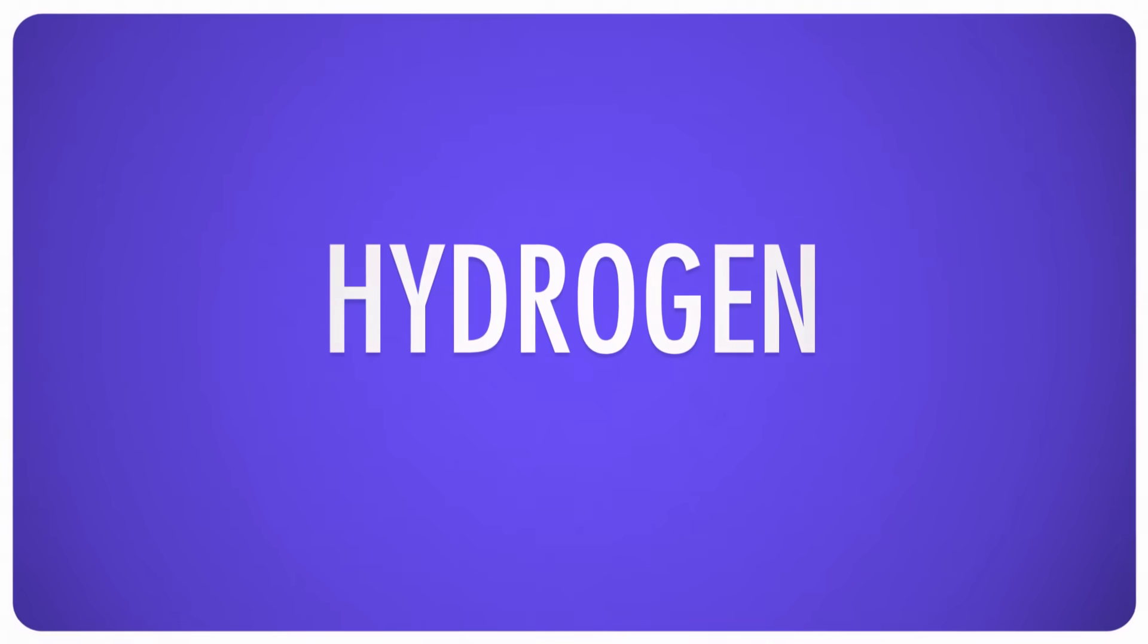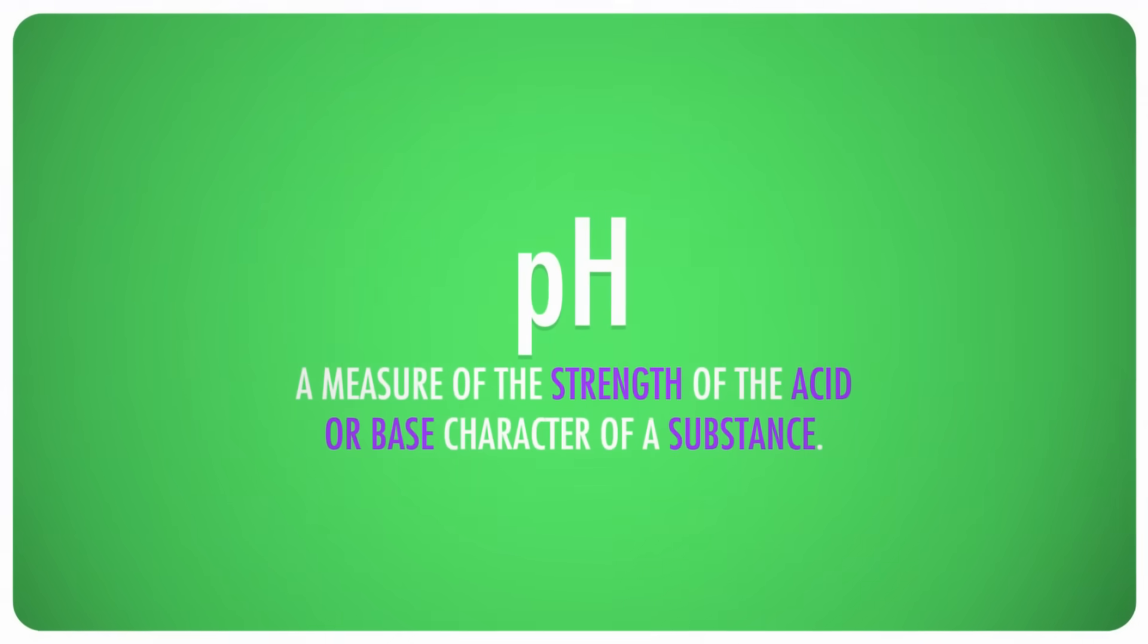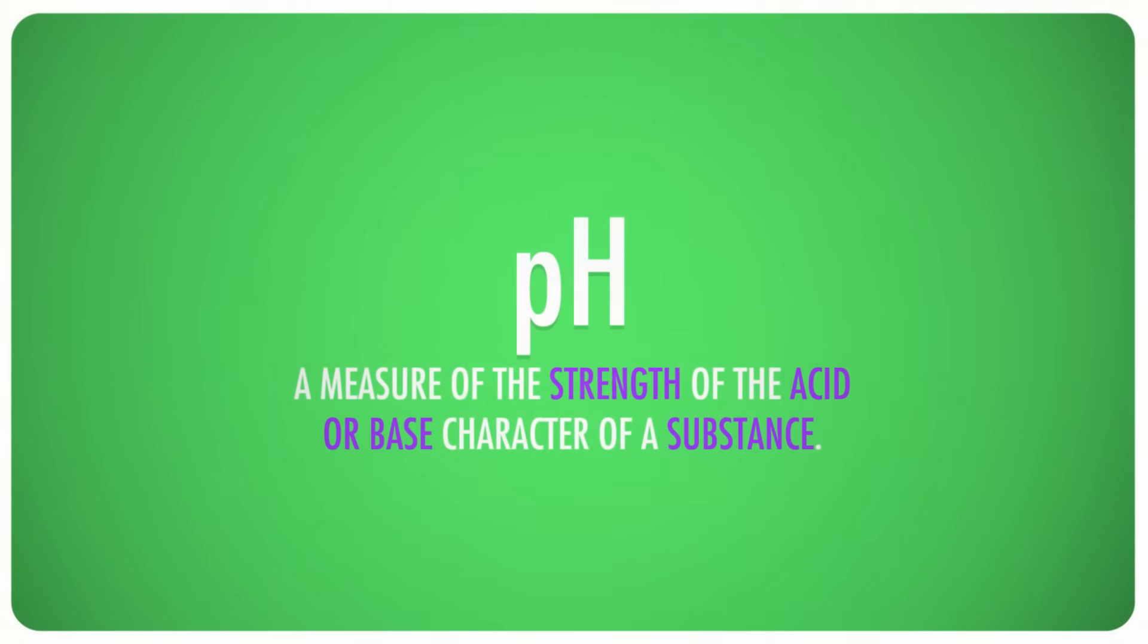But thinking of the P as standing for power does help us remember the meaning more easily. The H part is even easier, it stands for hydrogen, because hydrogen ions, or protons, are pivotal to the behavior of acids and bases, which is what pH describes. So you can think of pH as basically the power of hydrogen in a solution, the strength of the acid or base character of a substance.